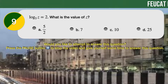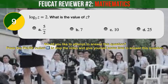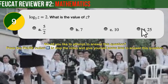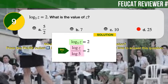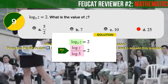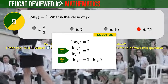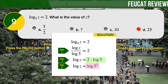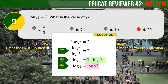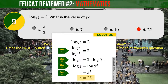Question Number 9. The logarithm base 5 of Z is equal to 2. What is the value of Z? A: 5 halves. B: 7. C: 10. D: 25. The correct answer is D, 25. Logarithm base 5 of Z can be rewritten as logarithm of Z over logarithm of 5. Multiplying both sides by logarithm of 5, we get logarithm of Z equals 2 times logarithm of 5. Using logarithmic identities, 2 times logarithm of 5 equals logarithm of 5 squared. Dropping the logarithm on both sides gives Z equals 5 squared, therefore Z equals 25.